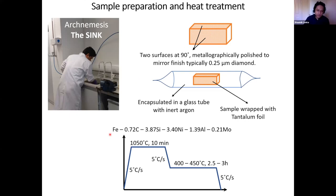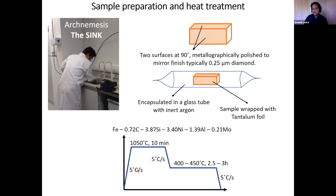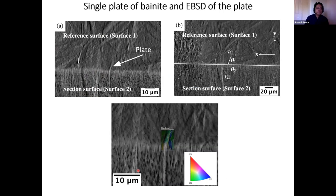I wanted to avoid spot welding thermocouples and handling the sample too much in the dilatometer, so I used a normal muffled furnace oven arrangement for these heat treatments. The chemistry is given here — nanostructured bainitic steel — many of these compositions are available in Harry's book and the literature. The heat treatment was approximately 1050°C for 10 minutes for homogenization so it's completely austenite, then bringing it down to 400–450°C, holding for two to two-and-a-half to three hours, then cooling to room temperature.